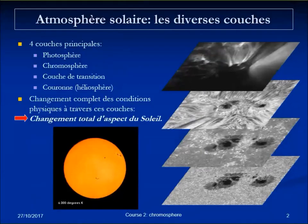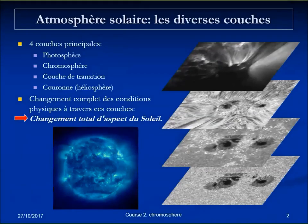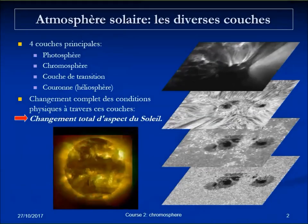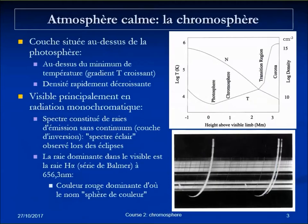This slide illustrates how the aspect of the solar atmosphere changed drastically through different layers, reflecting changes in the physical conditions in those layers. Going to the chromosphere, the main change compared to the photosphere is the reversal of the temperature gradient. The temperature that had dropped from the center of the Sun down to the top of the photosphere reverses, which is contrary to thermodynamic levels. We'll see why.